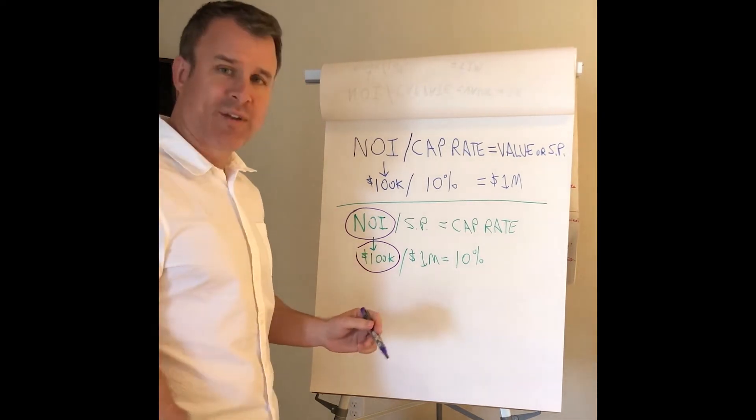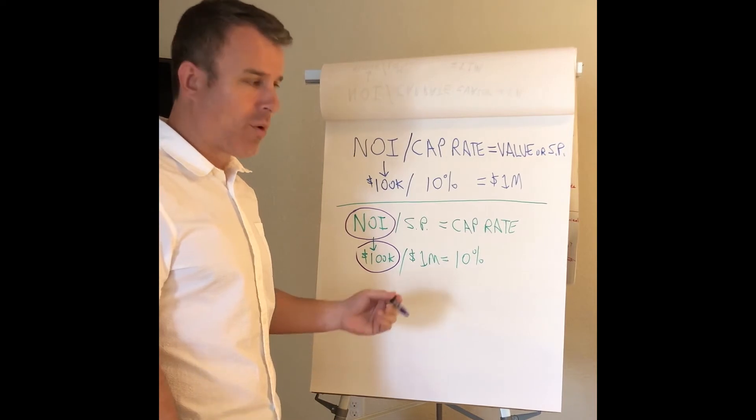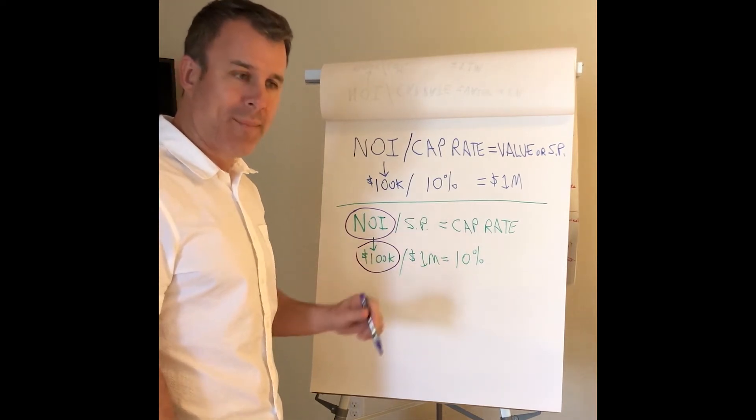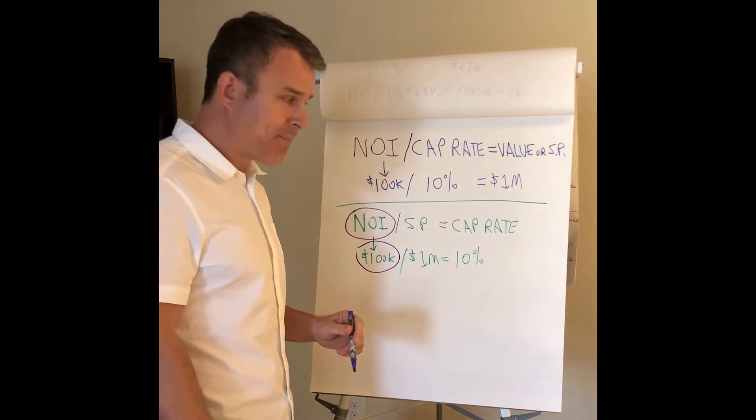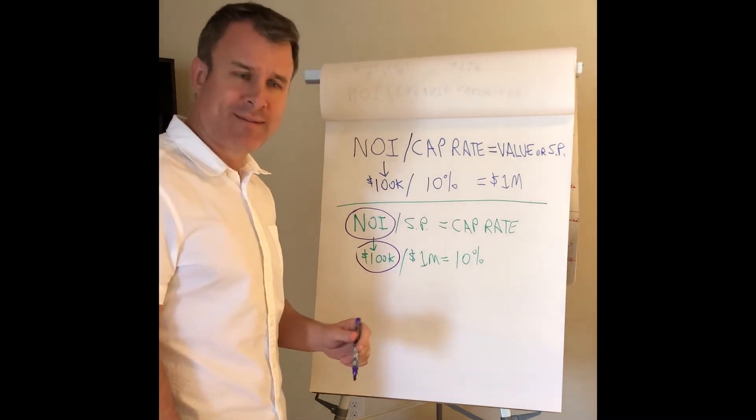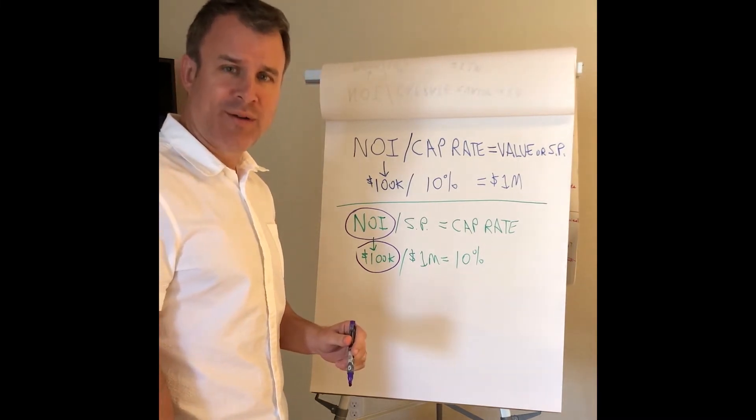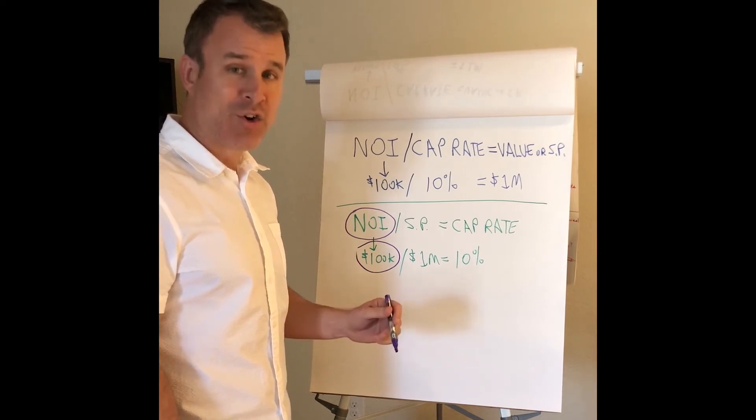Well, what if the current owner has owned it for a long time and my property tax is going to go way up? What if the current owner self-manages and pays $600 or $700 a unit for a property and I'm going to have to pay $1,100 per unit per year? Major difference there.